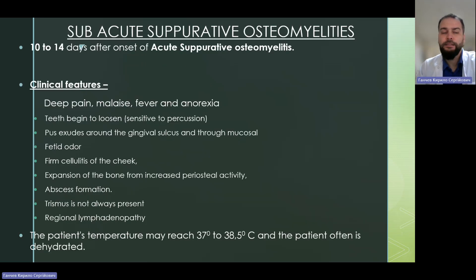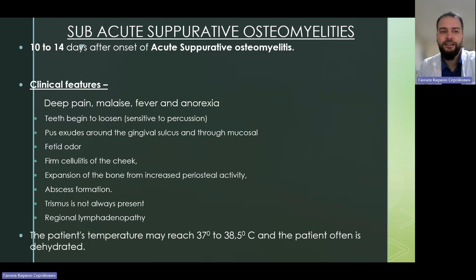Subacute suppurative osteomyelitis is seen from 10 to 14 days after onset of acute suppurative osteomyelitis. Clinical features include deep pain, malaise, fever, and anorexia. Teeth begin to loosen and become sensitive to percussion. Pus exudes around the gingival sulcus and there is a fetid odor. Firm cellulitis of the cheek, expansion of bone from increased periosteal activity, abscess formation, and trismus may be present. Regional lymphadenopathy is noted. The patient's temperature may reach 37 to 38 degrees Celsius and the patient is often dehydrated.